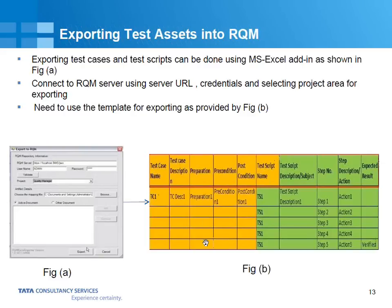This is the spreadsheet format which the RQM server will be expecting. This is the format we need to enter — the usual format that testers follow — like test case name, description, test case preparation, pre-condition, post-condition, and navigation steps associated with a particular test case. All these are useful pieces of information, and a little bit of formatting is required.